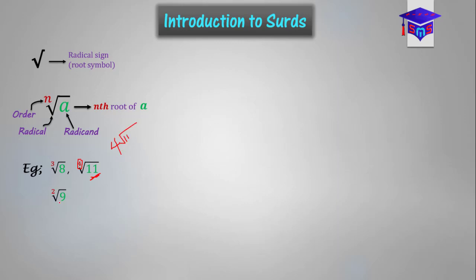And then this is the square root of 9. The order is 2. And this is basically written as the root of 9 without the order shown, because that's what we've been using in our calculations normally. So when we talk about surds, what comes to our mind is the radical sign or the square root sign.